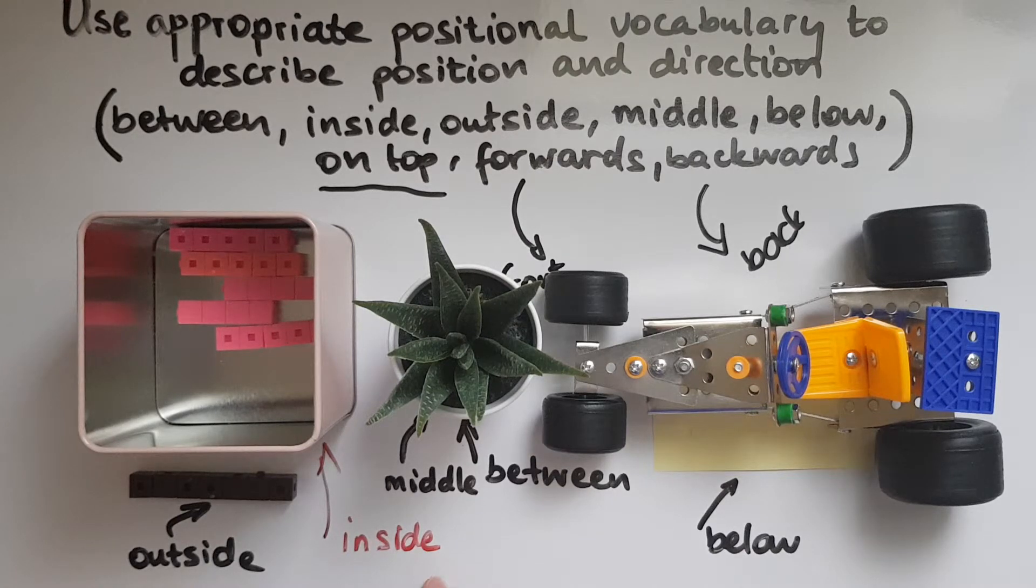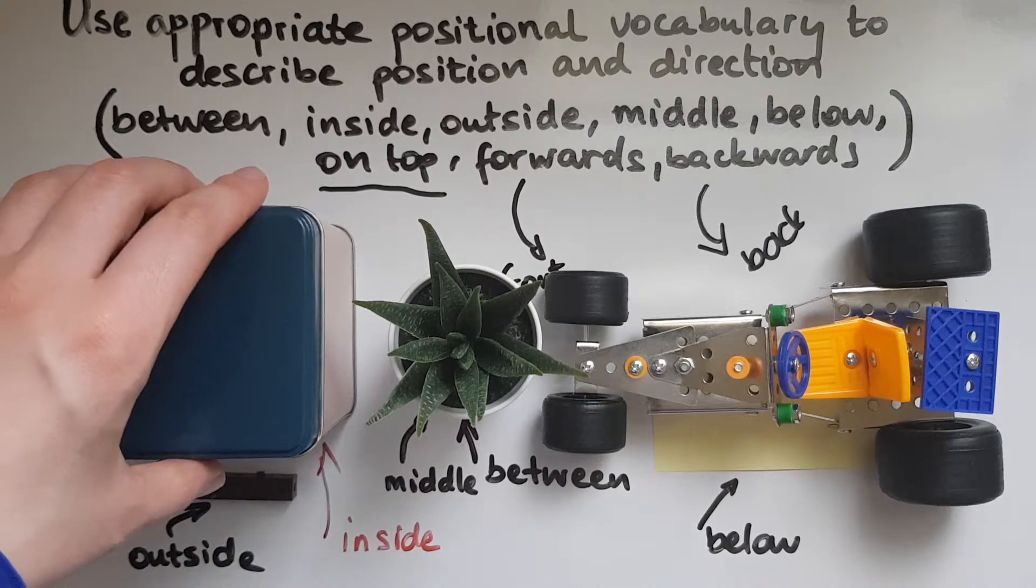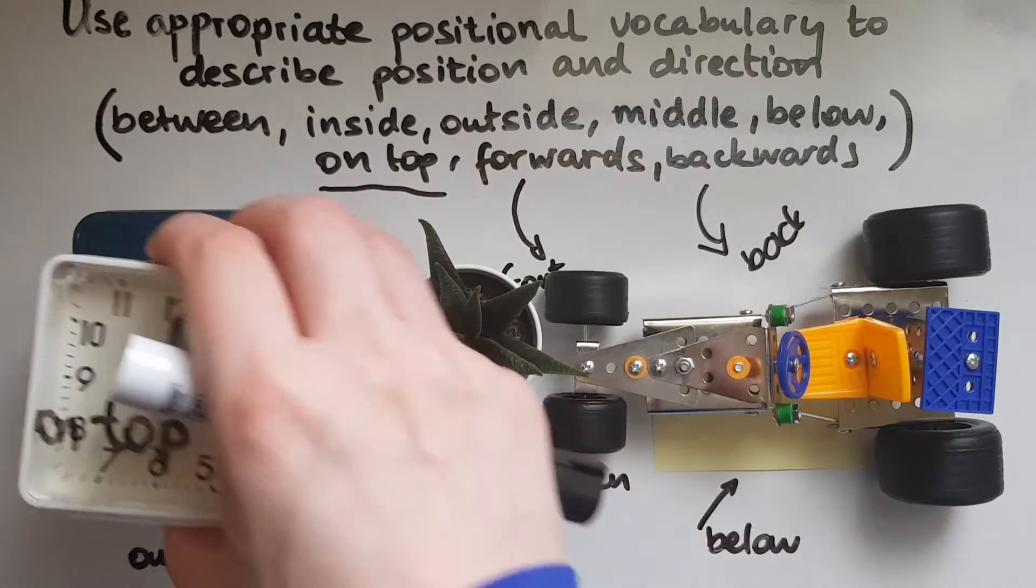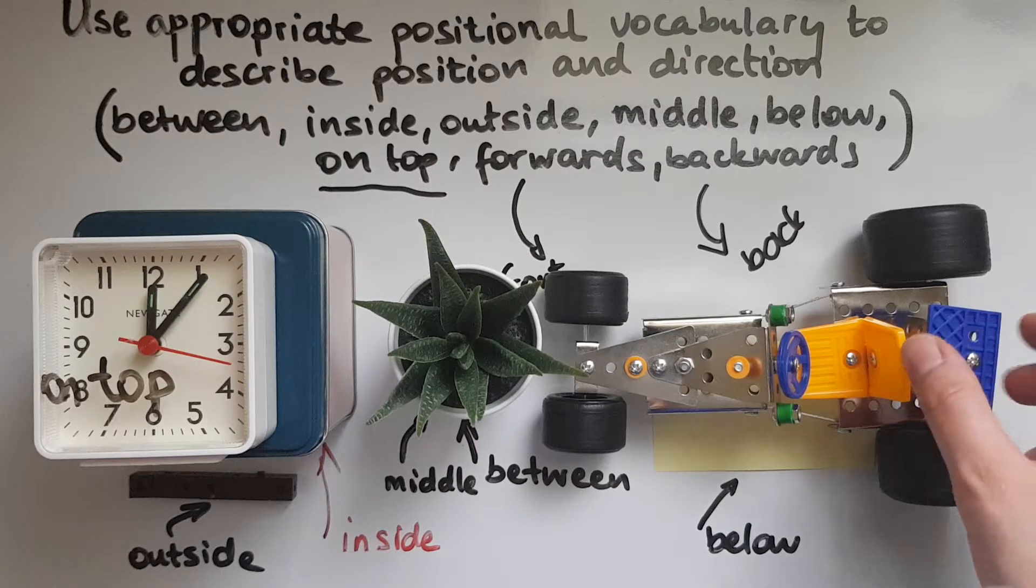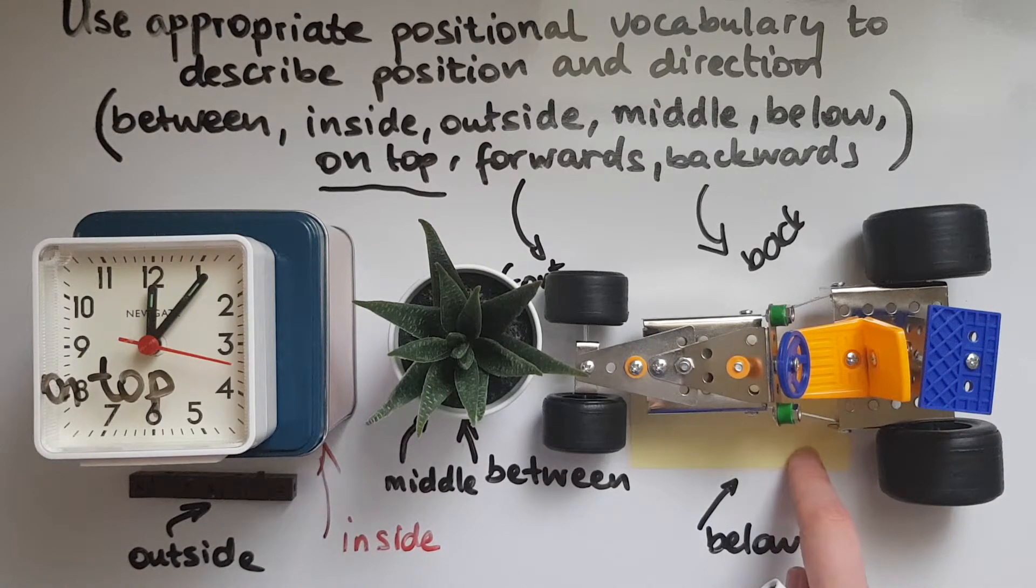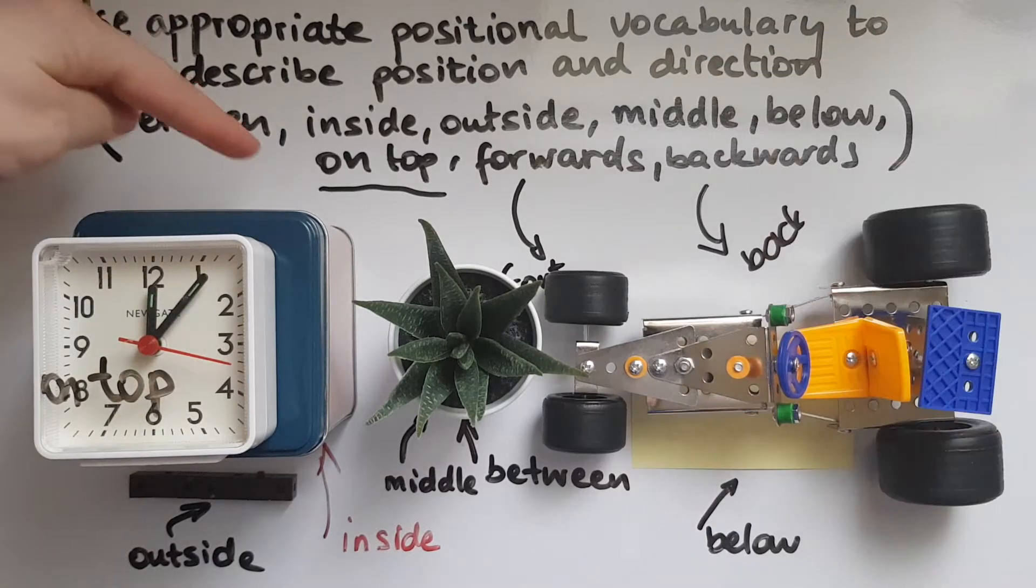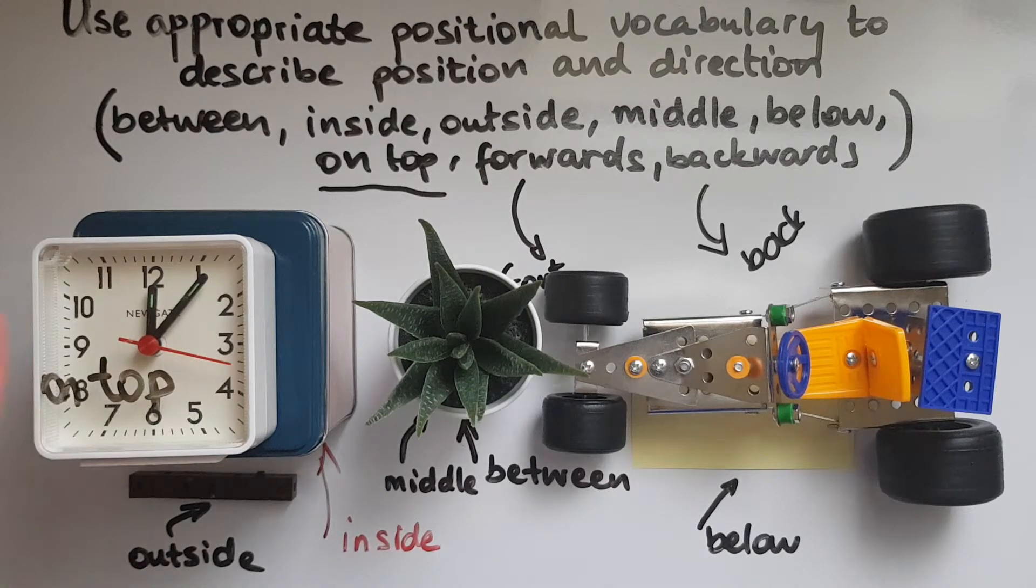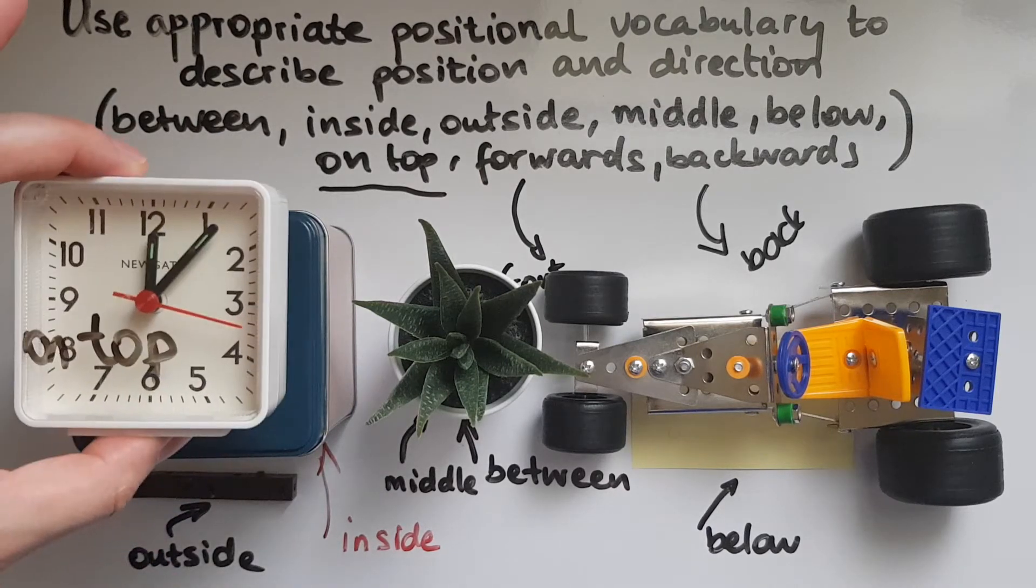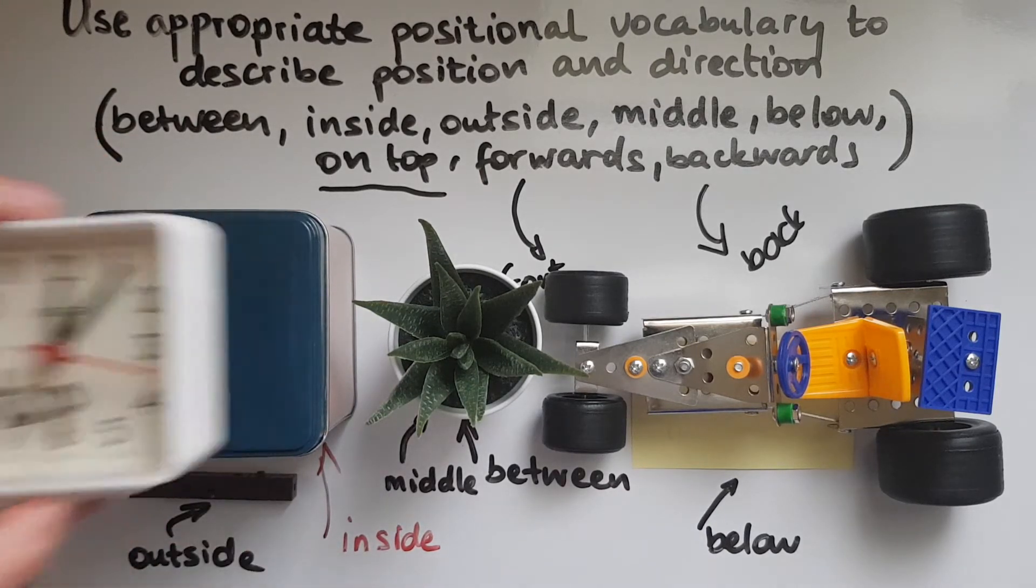And we looked at below. So all these items are below the title or the objective. And below the toy car there was a post-it. And the title itself is on top, on top of these items. And also the clock is on top of the tin.